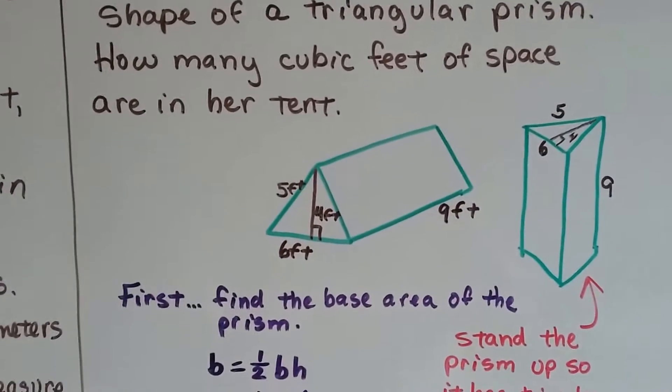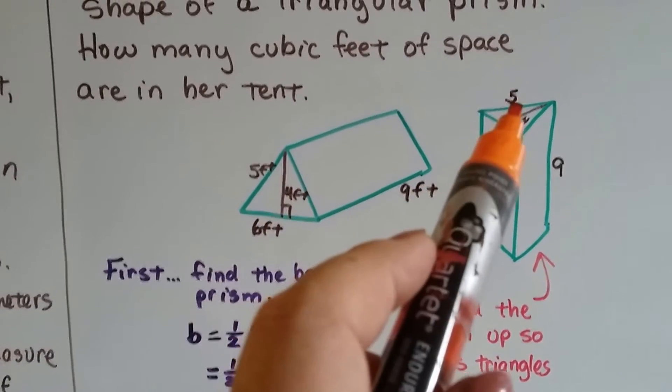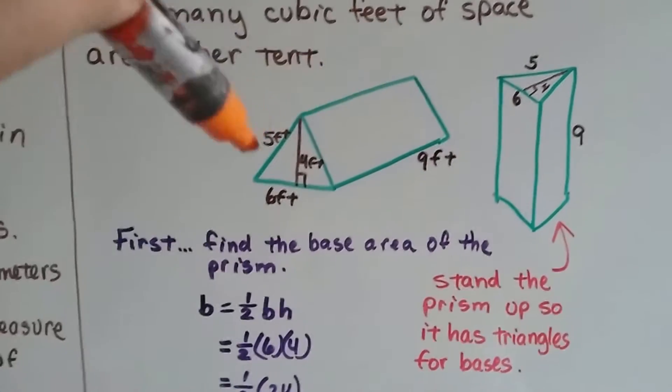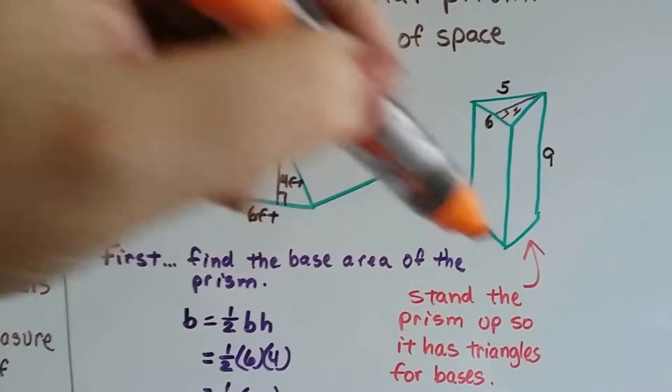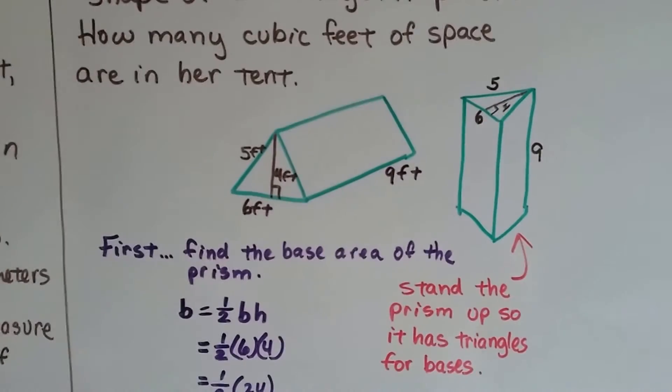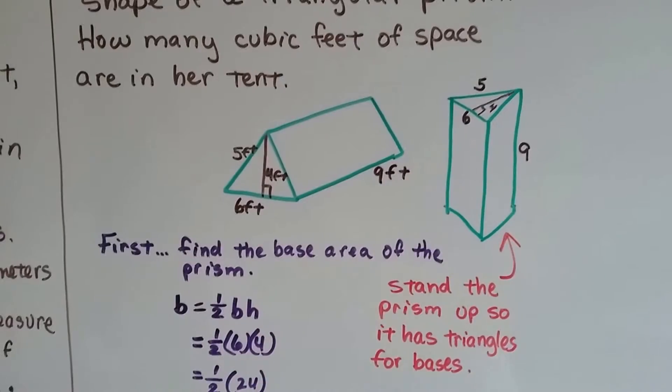So the first thing we do is find the base area of the prism. And the base of a prism is its polygon shape. So we stand it up on end so that the triangle is on the top and on the bottom. So those are its bases. And the rectangles end up becoming the lateral sides.